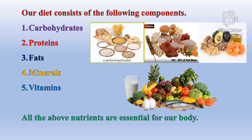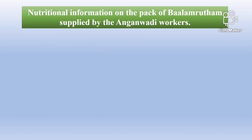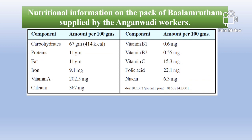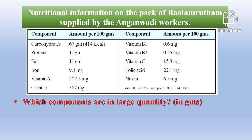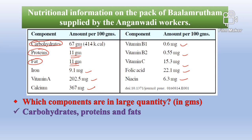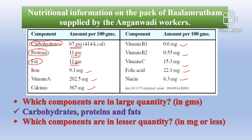Here is the nutritional information given on the pack of Balamrutam supplied by anganwadi workers. This is a good nutritive food. Let us study this table. Which components are present in large quantities in grams? Carbohydrates, proteins and fats are present in grams, while the remaining nutrients are present in just milligrams or less. So the answer is: carbohydrates, proteins and fats are in large quantities, and except these three, the remaining all are in lesser quantities.